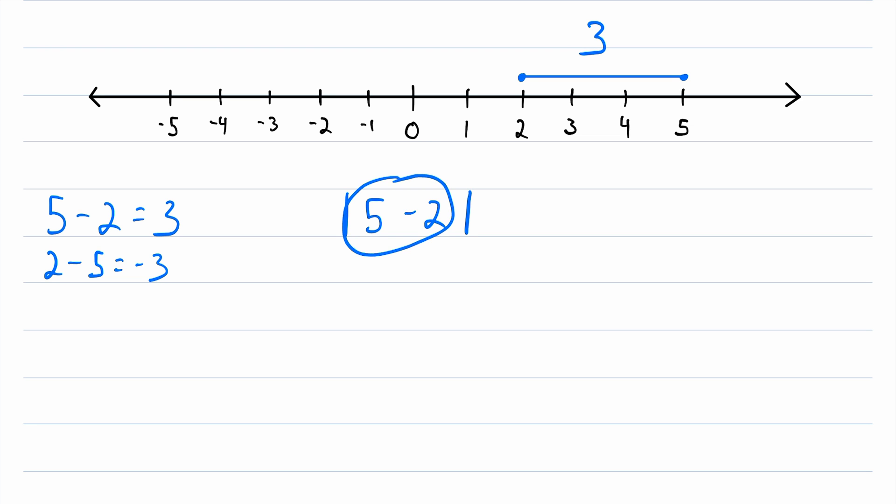If the quantity in the absolute value bars is positive, then the absolute value bars don't change anything. So the absolute value of 5 minus 2 is still 3. And it works the same way for 0. Remember that 0 is neither positive nor negative. The absolute value of 0 is equal to 0.